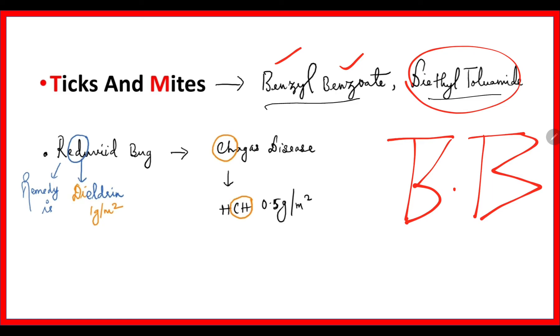Coming to the Reduviid Bug — it is killed with Dieldrin, 1 gram per square meter area. The Reduviid bug causes Chagas disease. Another insecticide used is BHC.